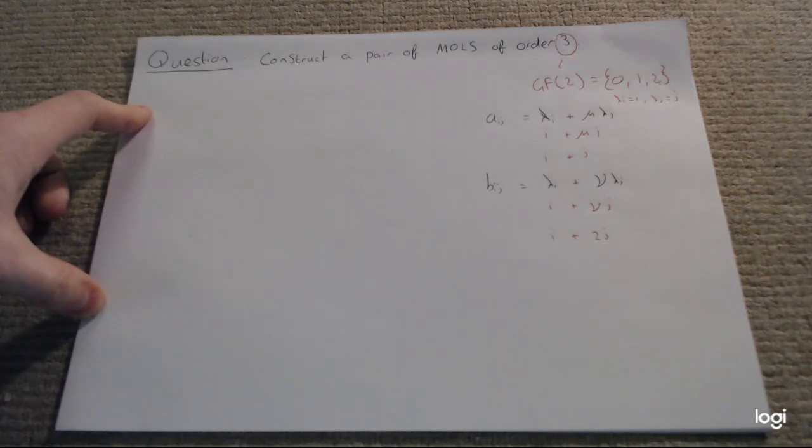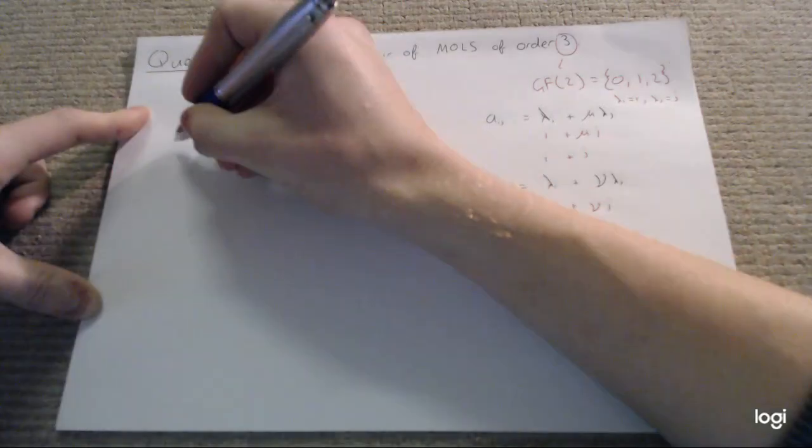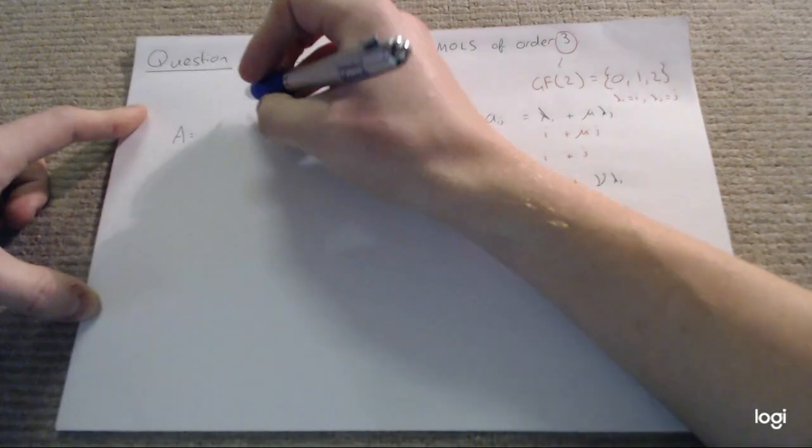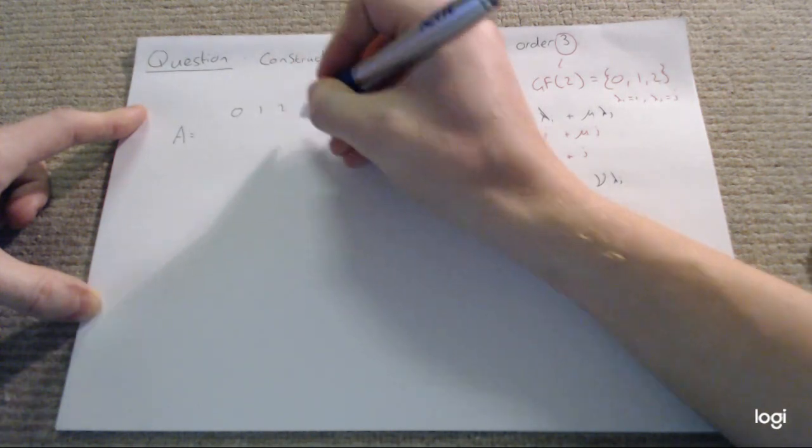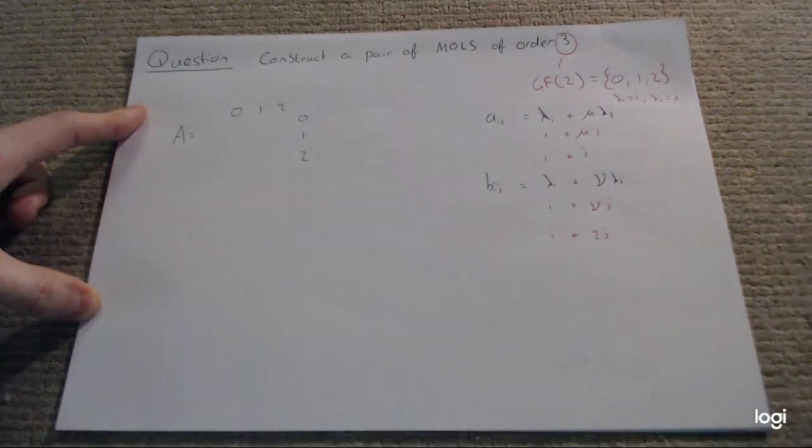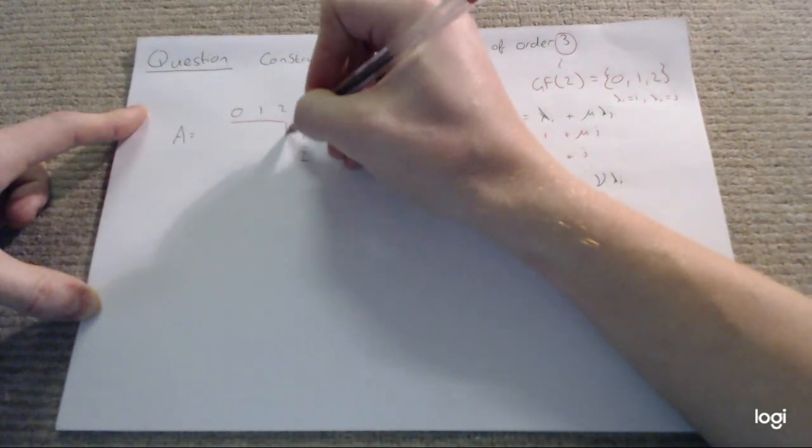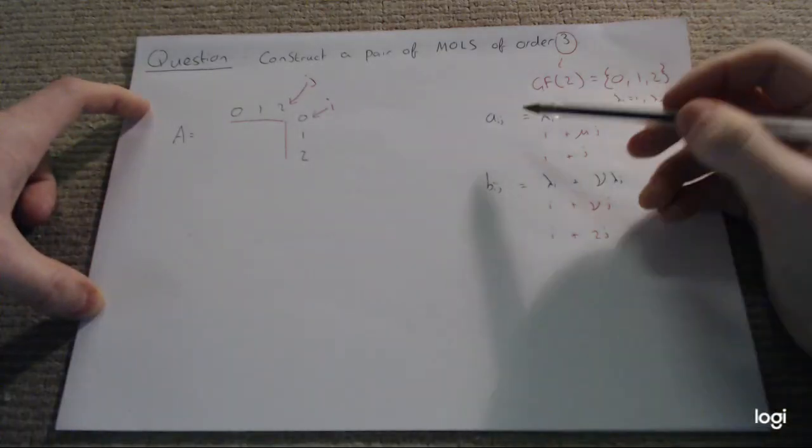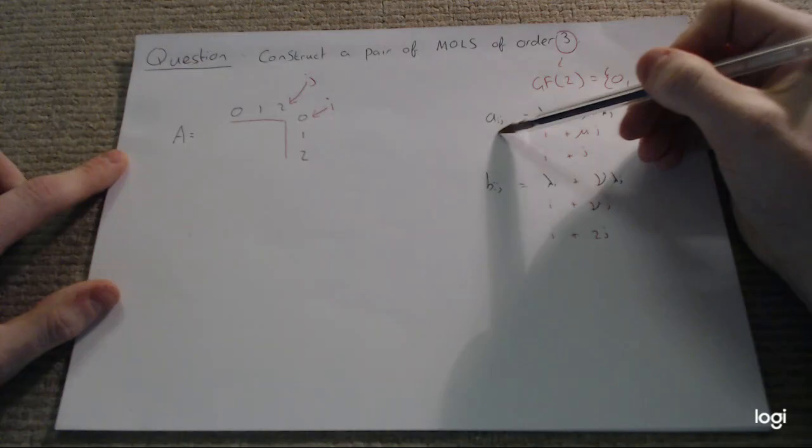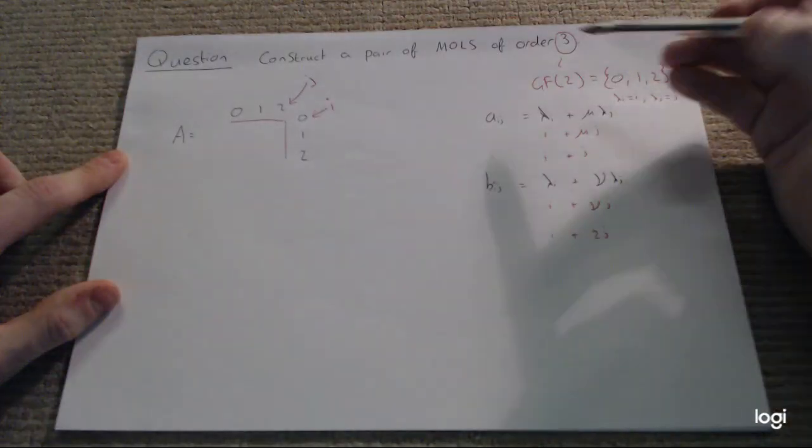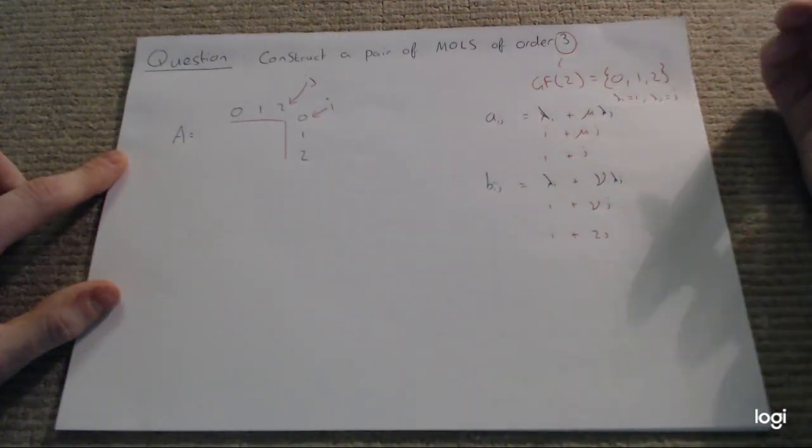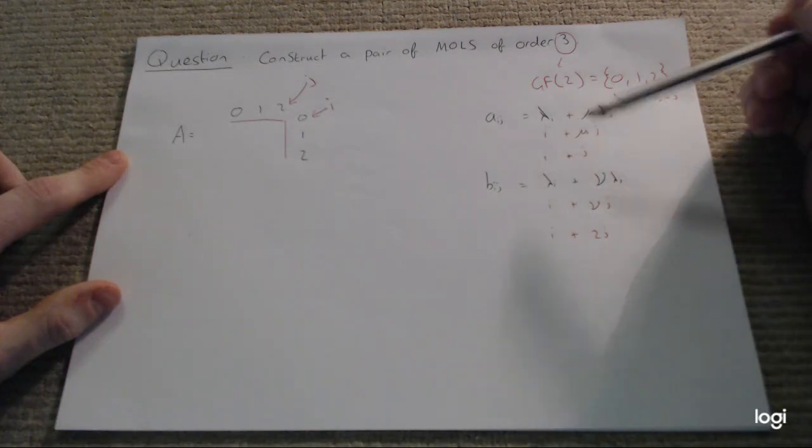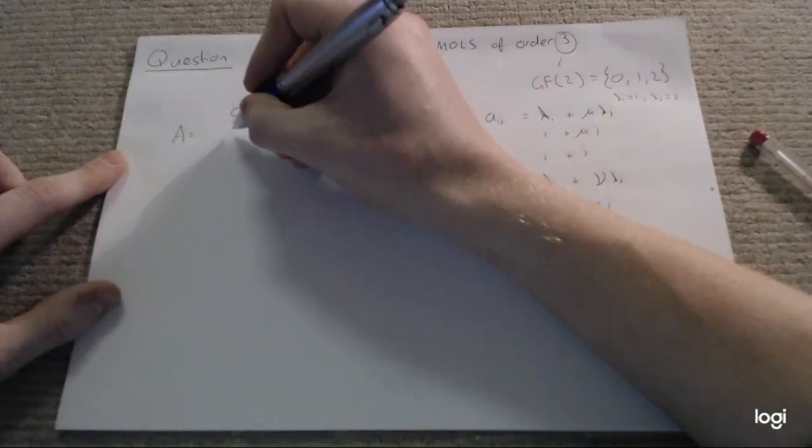Let's use our equations. We have our first Latin square we will call A. To avoid confusion with rows and columns, this denotes i and this denotes j. So any position in my Latin square, given by row i and column j, is given by this column. If I'm looking at 0 and 0, I'm just going to sub 0 and 0 in there. 0 plus 0, nice and easy, 0.